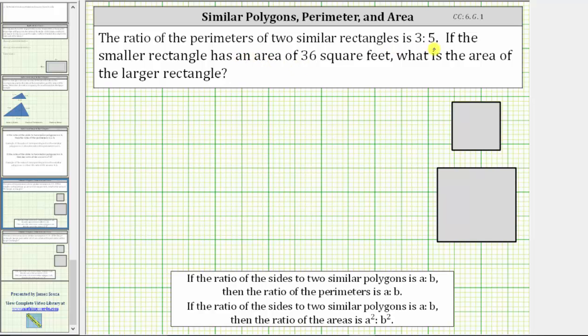So because we are given the ratio of the perimeters is three to five, the ratio of the areas is three squared to five squared, which is equal to nine to 25.